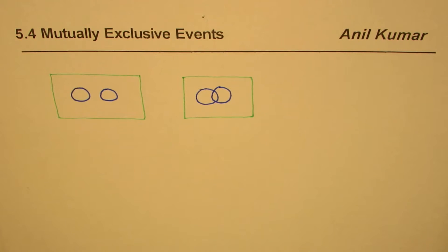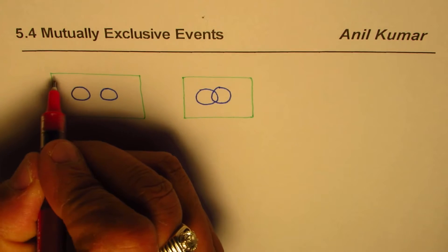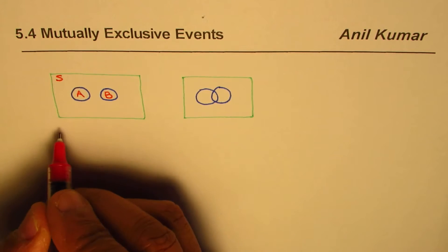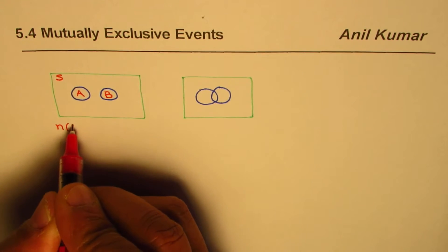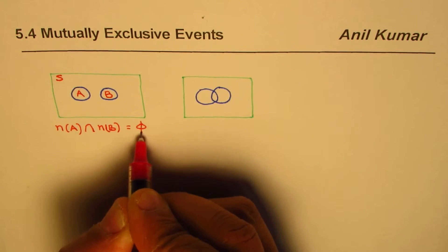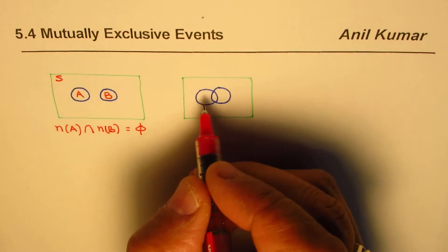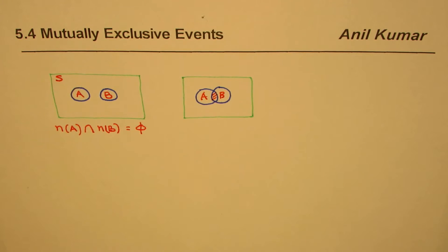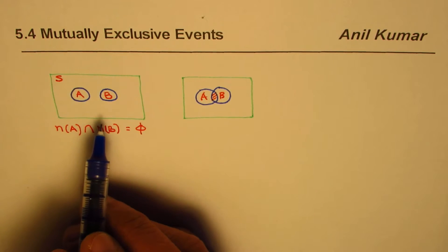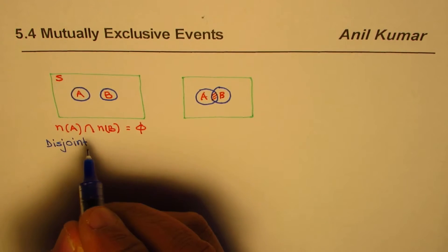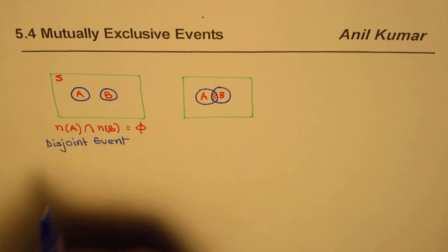Let's say we have two events A and B. In this case, what is the intersection of A and B? The number of elements in A intersection B is basically a null set — there is no intersection. However, in the overlapping case, the intersection of A and B contains common elements. So the first case can be treated as disjoint events.